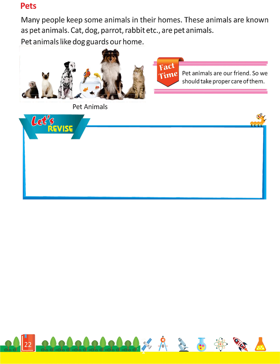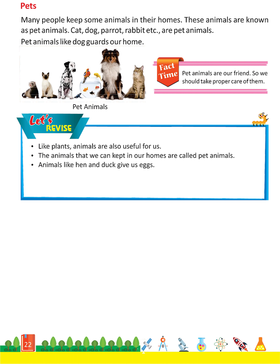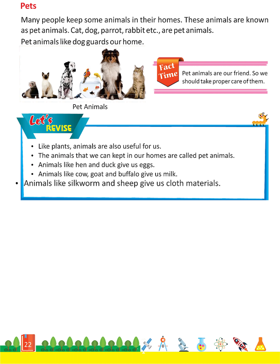Let's revise. Like plants, animals are also useful for us. The animals that we keep in our homes are called pet animals. Animals like hen and duck give us eggs. Animals like cow, goat and buffalo give us milk. Animals like silkworm and sheep give us cloth materials. Animals that carry our loads are called beasts of burden.